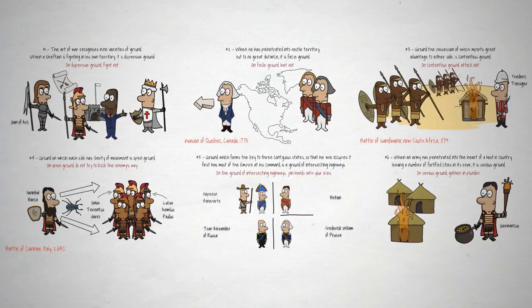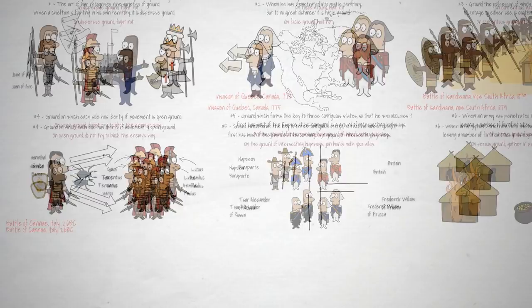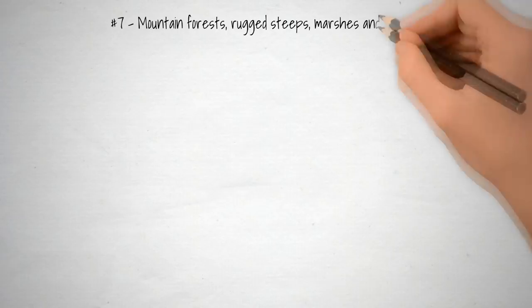Lesson number 7. Mountain forests, rugged steeps, marshes and fens — all country that is hard to traverse. This is difficult ground. In difficult ground, keep steadily on the march.